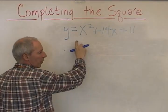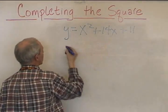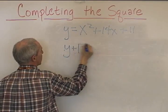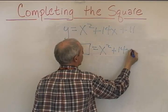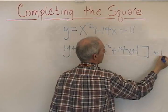That is not a perfect square trinomial, so we'll need to focus on these two terms. y plus something in a box equals x² plus 14x plus something in a box plus 11.